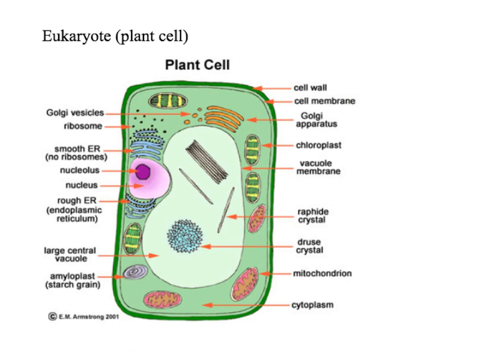This is also a eukaryotic cell, but this is a plant cell. You can tell it's a eukaryotic cell because it's got a nucleus. It's also got membrane-bound organelles, such as chloroplasts, Golgi apparatus, endoplasmic reticulum.